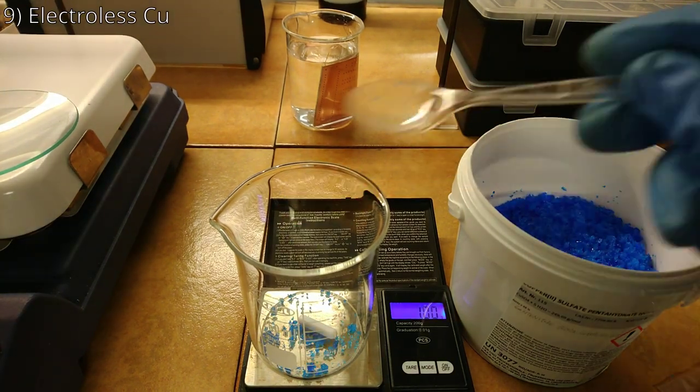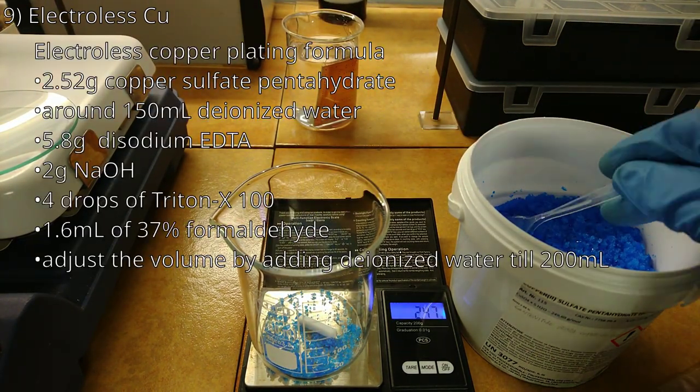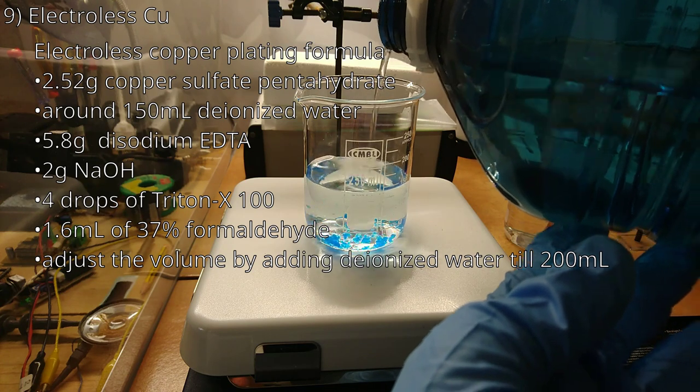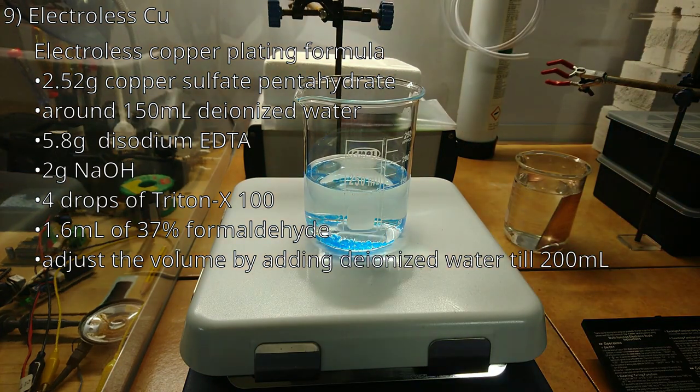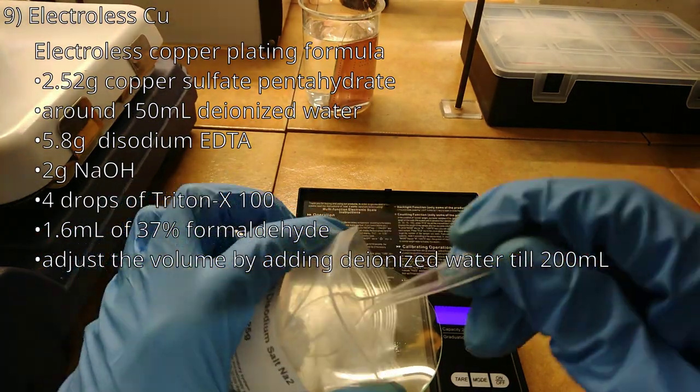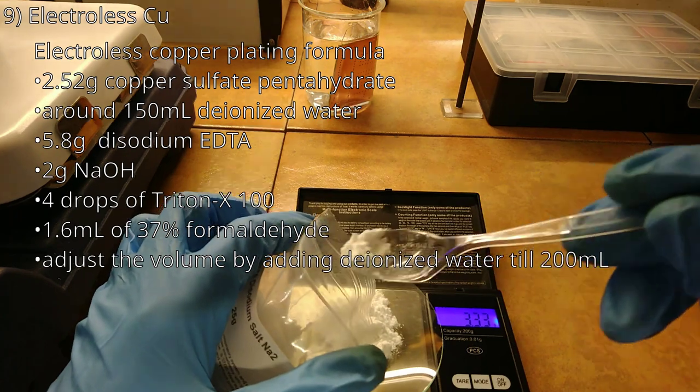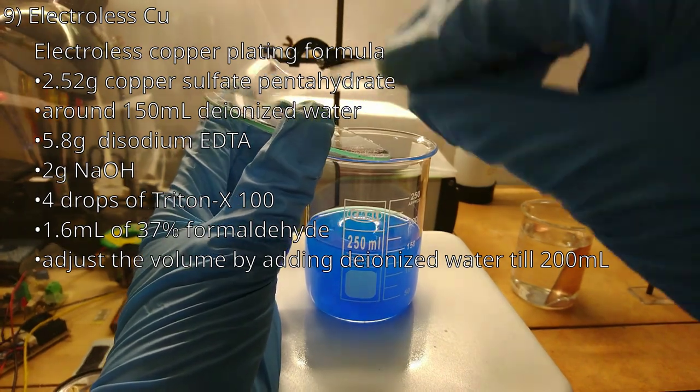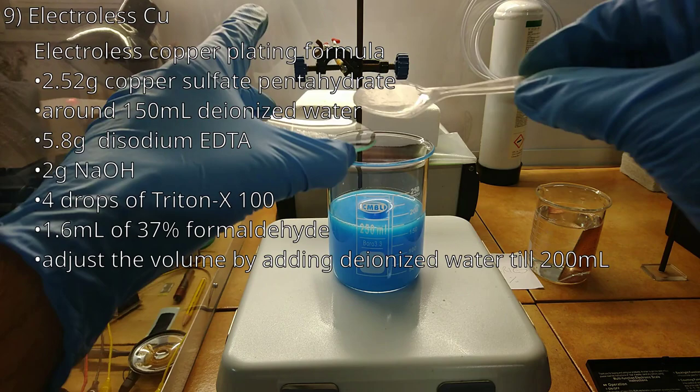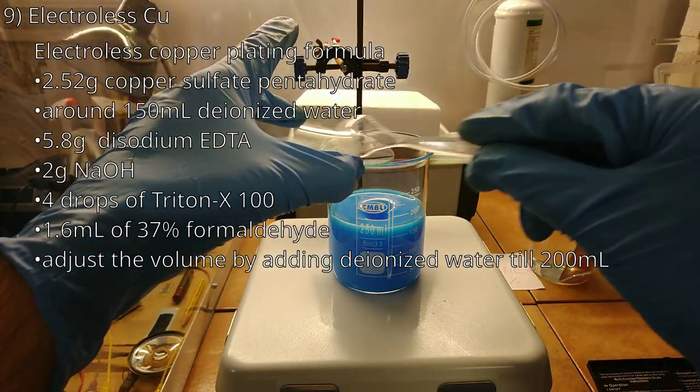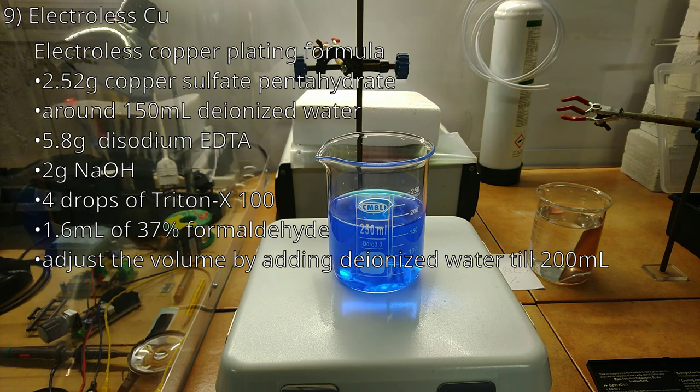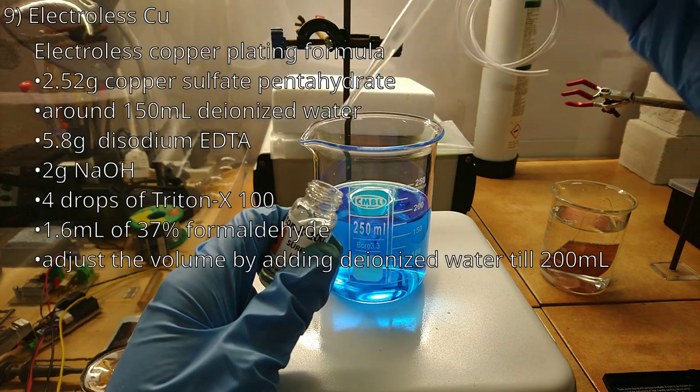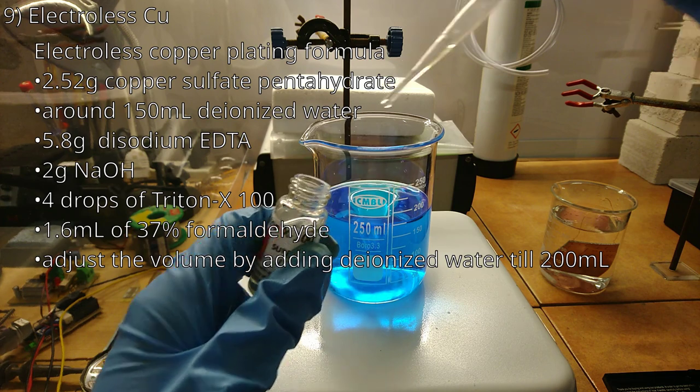Step 9 is the electroless copper bath. To prepare it, start with adding 2.52 g of copper sulfate pentahydrate to a beaker. Followed by around 150 ml of deionized water. Stir until all copper sulfate is dissolved. Once this is done, add 5.8 g of disodium EDTA. Stir for a while, but this will not dissolve completely. Add around 2 g of sodium hydroxide and stir. Now the EDTA will fully dissolve. Add 4 drops of Triton X-100, a surfactant used as brightener to improve the quality of the plating.